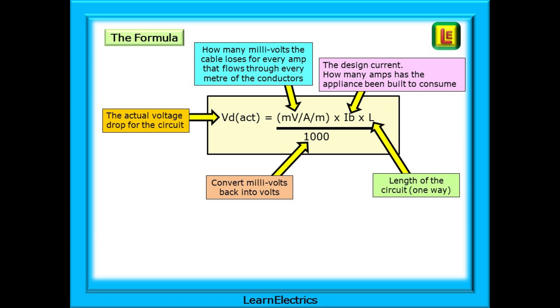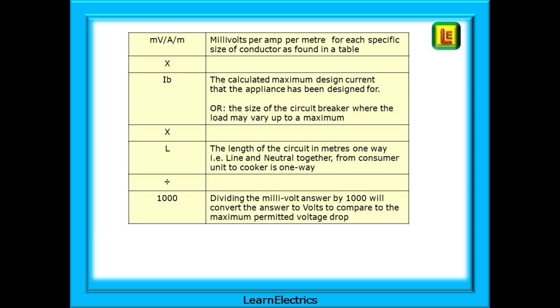Starting on the left at the nine o'clock position, we have the actual voltage drop that we are going to calculate for this circuit. Working clockwise, the equation itself begins with the blue box. Millivolts per amp per meter. How many millivolts the cable loses for every amp that flows through every meter of the conductors? Next, we have IB, the design current, and then L for the length of the circuit. And we convert millivolts back to volts by dividing by 1000. This table breaks down each of these steps. Millivolts per amp per meter multiplied by IB and multiplied by the length, then all divided by 1000. Pause the video and follow the steps.